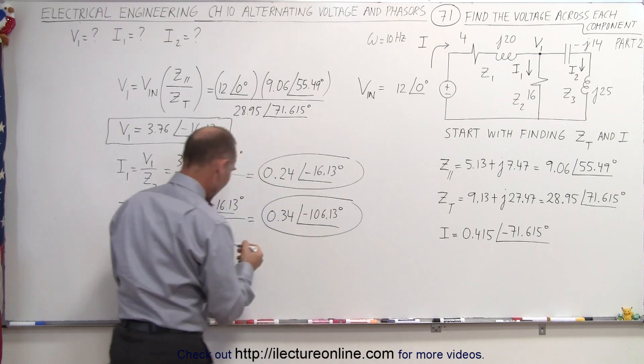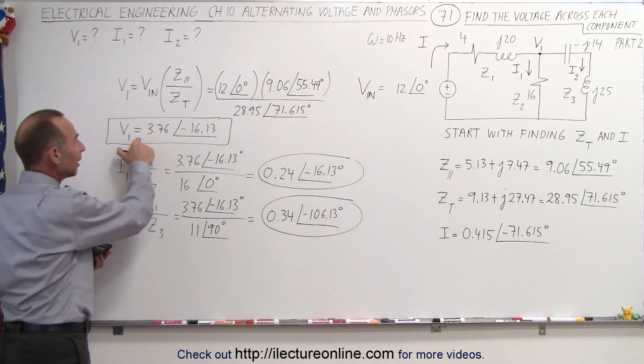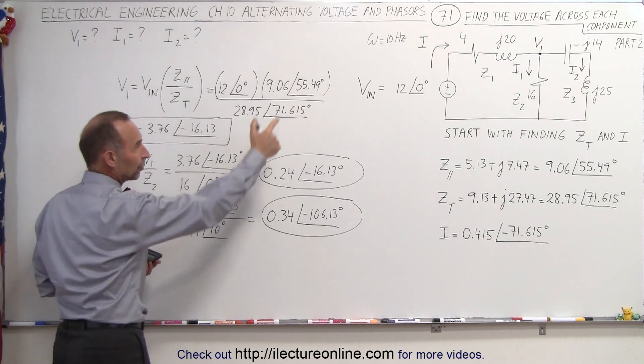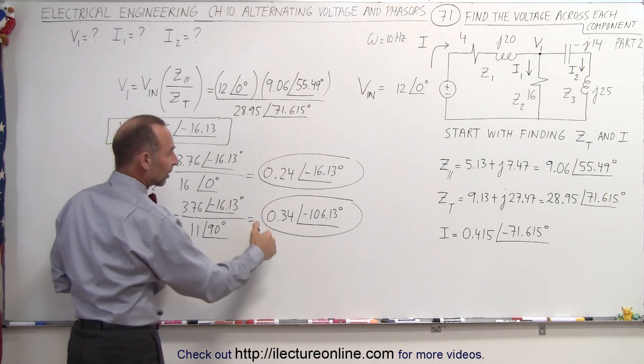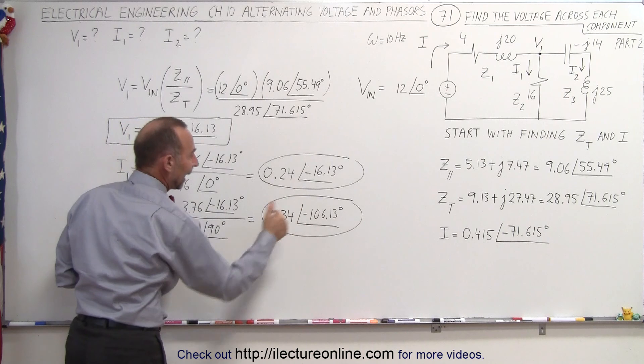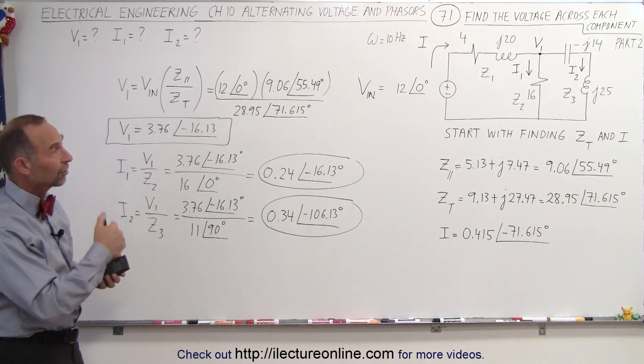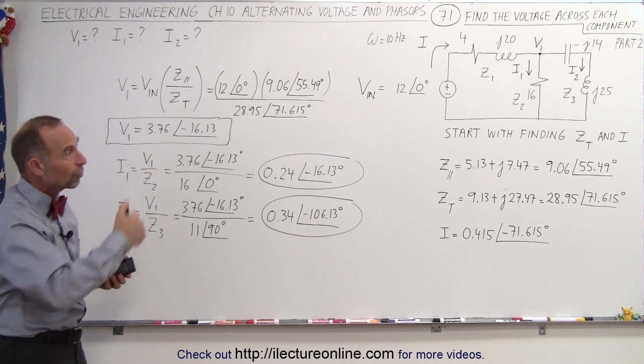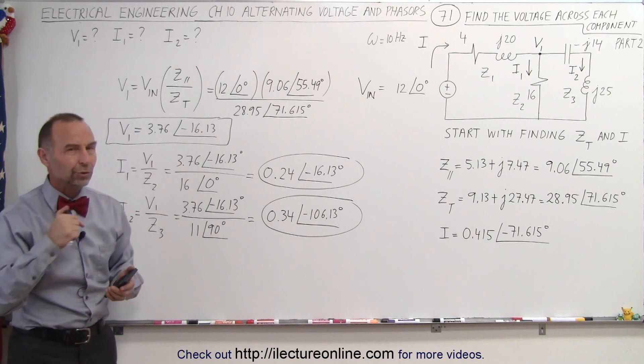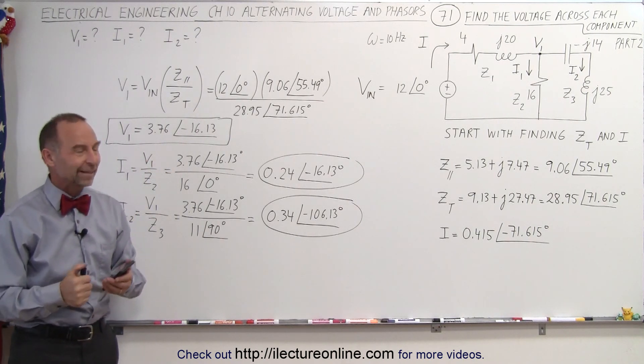And so now we have the voltage at the branch point, V1. We have the current I1 to the first branch and I2 to the second branch, both with magnitude and the phase angle. And now we're ready to go ahead and start calculating the voltages across each of the components. And we'll do that in our next video. And that's how it's done.